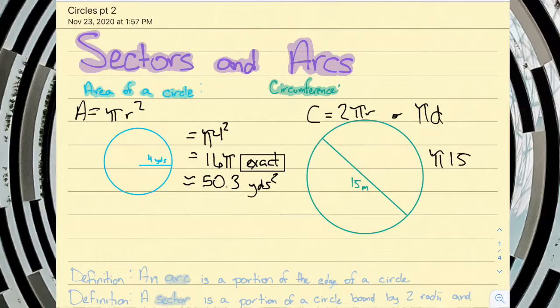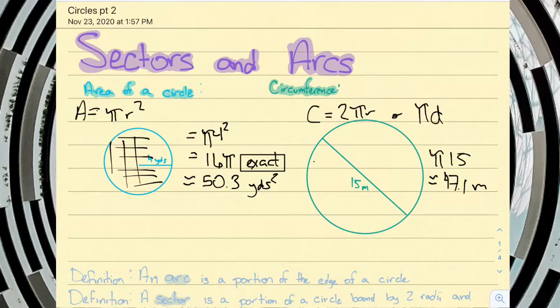Again, exact answer, no rounding needed. But to get our rounded answers, we'll go ahead and multiply 15 and π, and you get 47.1 meters. So it is important, the units you use. Circumference is a distance, so we'll just use meters. And again, area measures the space taken up, so its units are square yards or square meters.